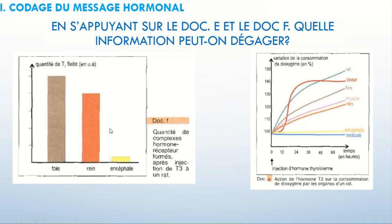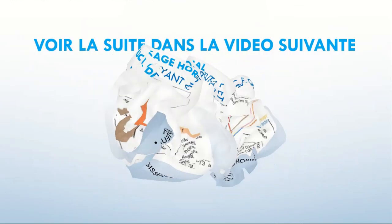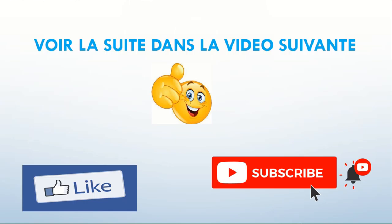J'ai bien vu qu'au niveau du foie, il y a une grande quantité de T3 fixée, une grande quantité de complexes hormones-récepteurs. Par contre, au niveau de l'encéphale, cette quantité est très faible. Si j'arrive à relier les informations de ces deux documents, je trouve que le foie a une consommation bien élevée de dioxygène, plus élevée que le rein, qui est beaucoup plus élevée que celle de l'encéphale. Et pour la quantité de T3 fixée, le foie fixe la plus grande quantité, alors que l'encéphale n'en fixe pas. Il y a donc un lien entre la quantité de complexes hormones-récepteurs et la quantité de O2 consommée. Les deux sont proportionnels : si l'une augmente, l'autre augmente. Donc les organes cibles réagissent en fonction de la quantité de complexes hormones-récepteurs formés.